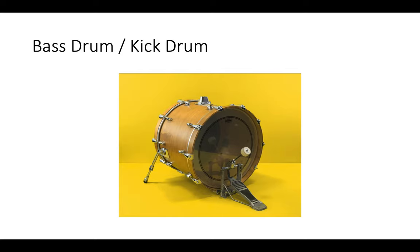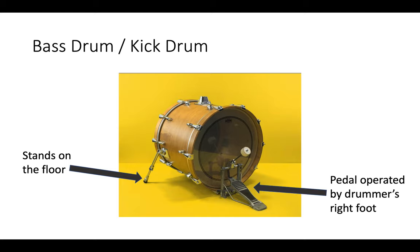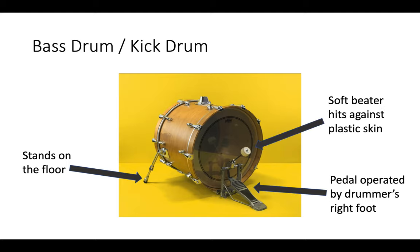Here's a few features of the bass drum. It stands on the floor — it's the only part of the drum kit that actually makes contact with the floor. And it has a pedal, which is operated by the drummer's right foot. When the drummer hits down that pedal, a soft beater strikes against the plastic skin, and that creates that thudding sound that you've all been hearing as you've been going through your lesson on Ableton.